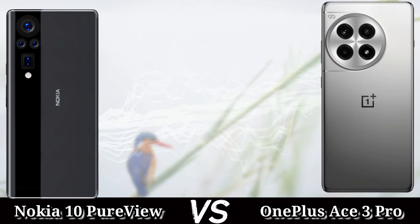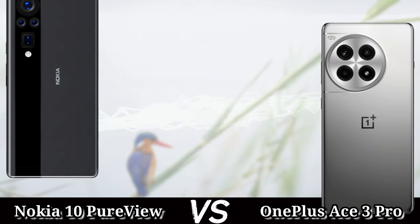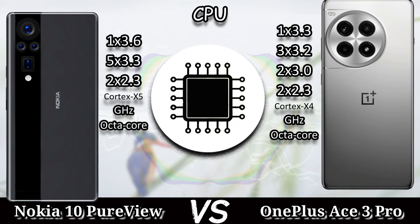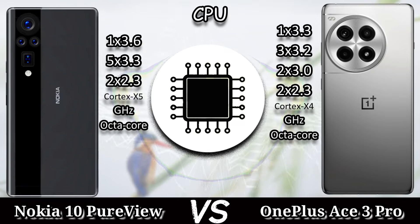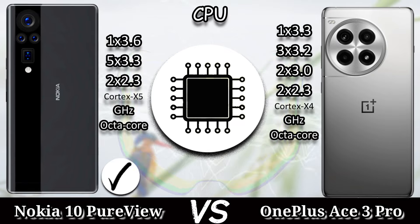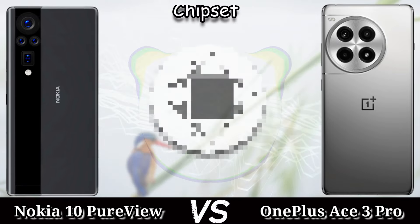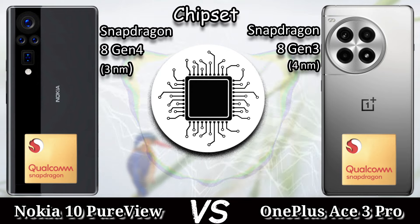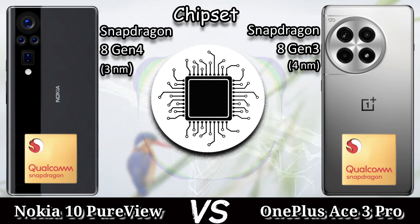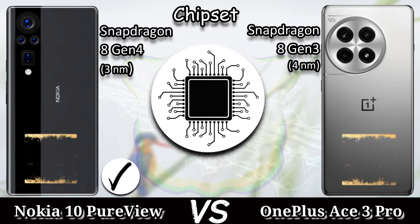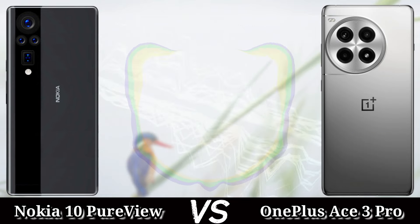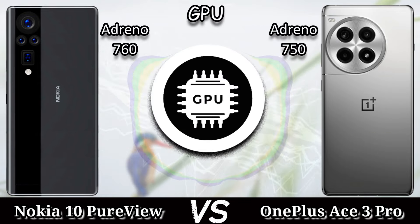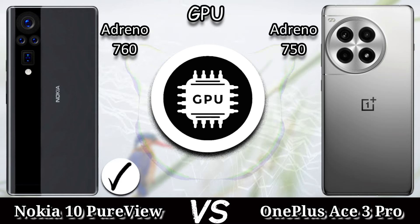The OnePlus A3 Pro uses a Snapdragon 8 Gen 3. The operating system of the Nokia 10 PureView is Android 15 and the OnePlus A3 Pro is Android 14 with ColorOS 14. The benchmark score of the Nokia 10 PureView is not available at this time; the OnePlus A3 Pro scored 2.3 million.